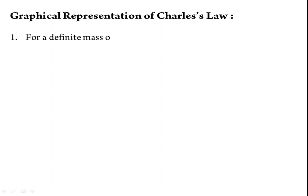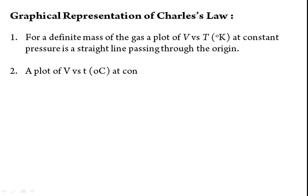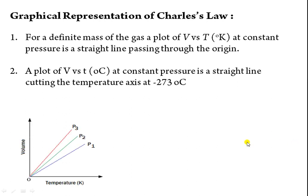Graphical representation of Charles's Law: for a definite mass of gas, plotting volume versus temperature at constant pressure gives a straight line passing through the origin, because volume is directly proportional to temperature. Varying temperature gives different straight lines.